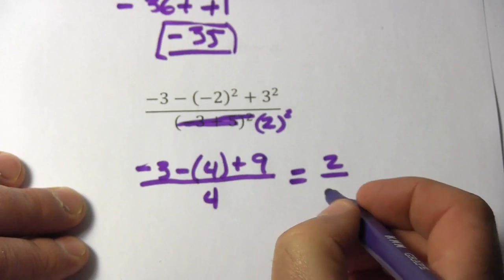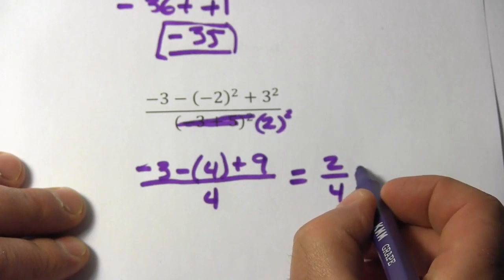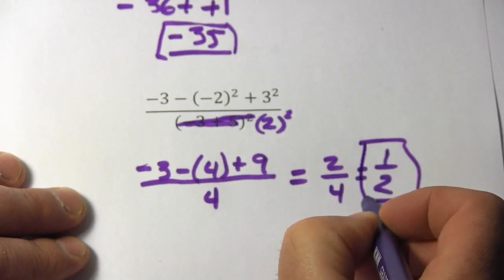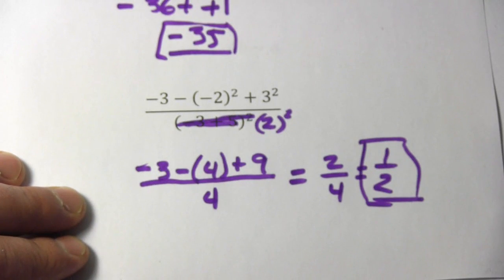and then we've got 4 on the bottom, and we can simplify 2 fourths to 1 half, and that is our answer there. So that's a little bit of work with the order of operations.